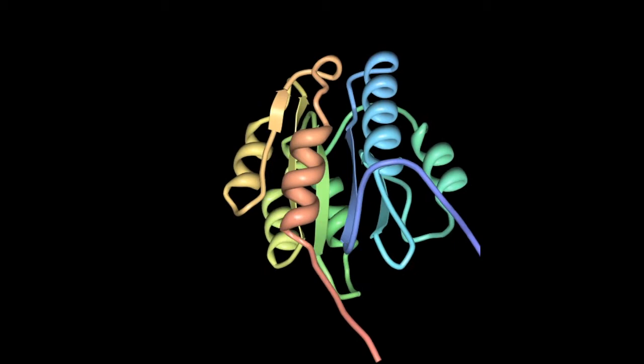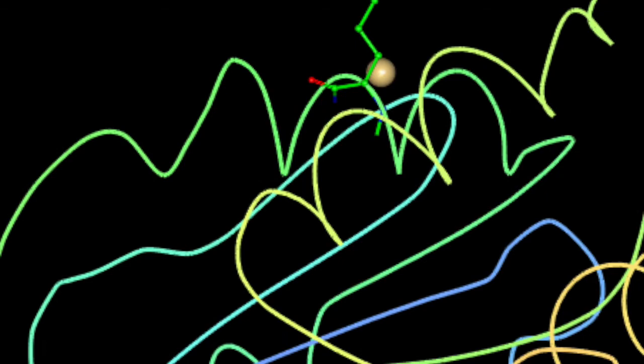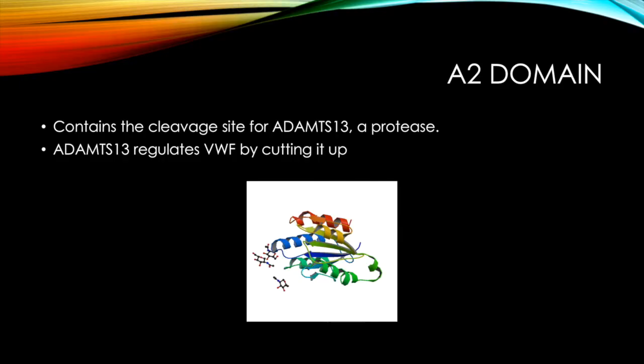But what is interesting about the A1 domain is that it suggests that von Willebrand factor binds allosterically to platelets and that it has two conformations: one with strong affinity and one with weak affinity to platelets. In addition, it was discovered that the lysine at position 599, as shown, binds directly to the platelet receptor.